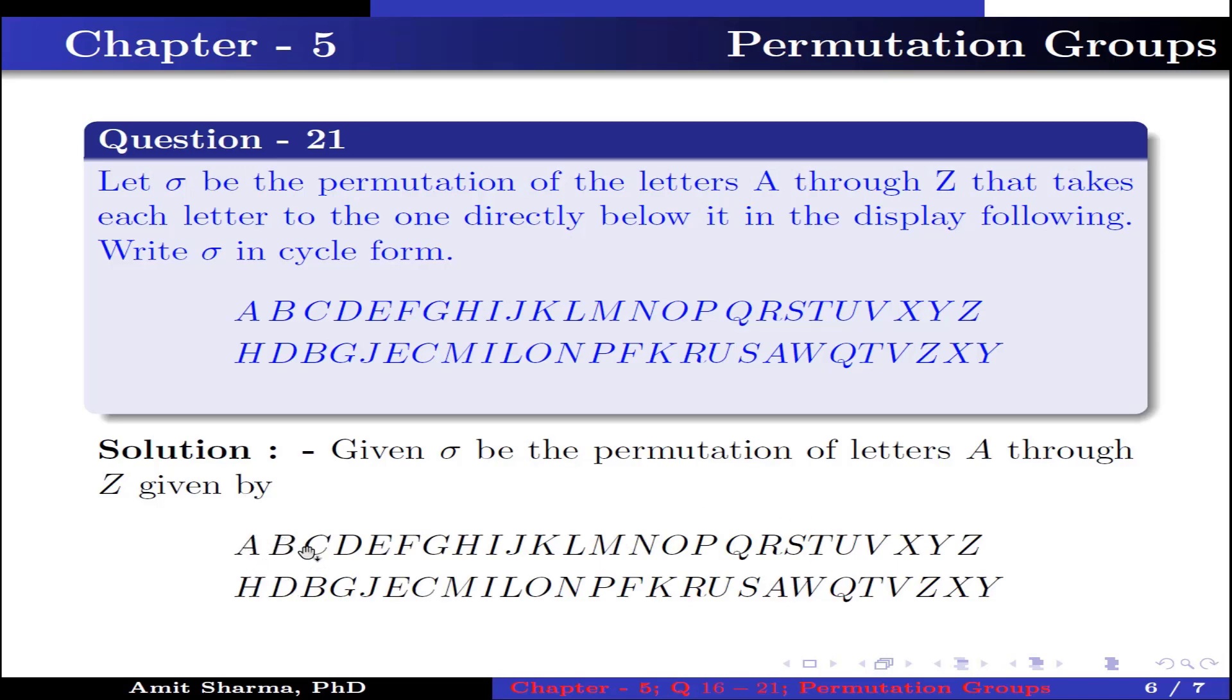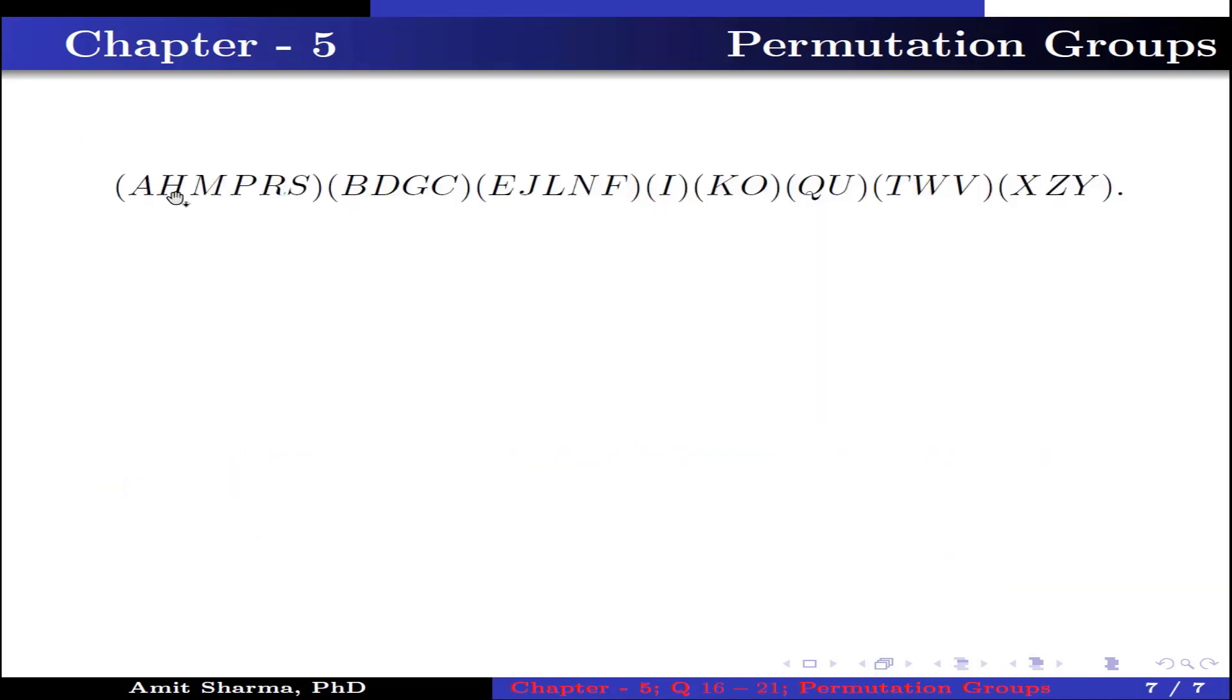Given σ is the permutation where A has image H, B has image D, C has image B, and so on, and Z has image Y. Now we can write it in cyclic form which is (AHMPRS) means A has image H, H has image M, M has image P, P has image R, R has image S, and S has image A. (BDGC) means B has image D, D has image G, G has image C, and C has image B. (EJLNF) means E has image J, J has image L, L has image N, N has image F, and F has image E.